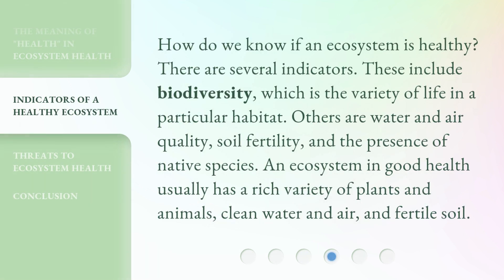How do we know if an ecosystem is healthy? There are several indicators. These include biodiversity, which is the variety of life in a particular habitat. Others are water and air quality, soil fertility, and the presence of native species. An ecosystem in good health usually has a rich variety of plants and animals, clean water and air, and fertile soil.